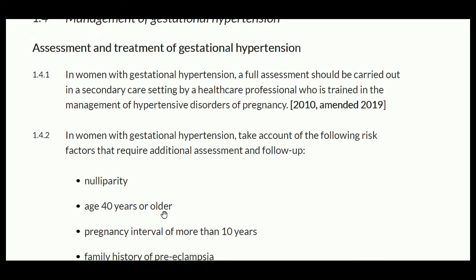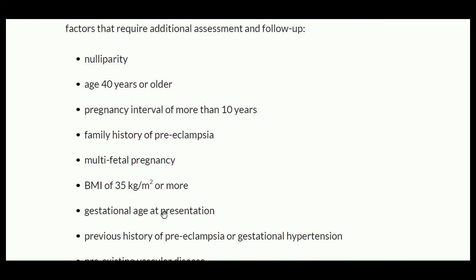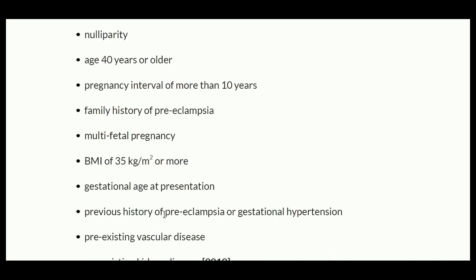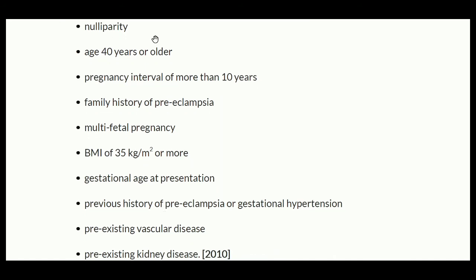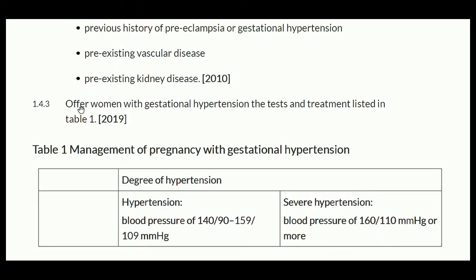In women with gestational hypertension, take into account the following risk factors: nulliparity, age 40 years or older, pregnancy interval of more than 10 years, family history of preeclampsia, multi-fetal pregnancy, BMI of 35 kg/m² or more, previous history of preeclampsia or gestational hypertension, pre-existing vascular disease, and pre-existing kidney disease.